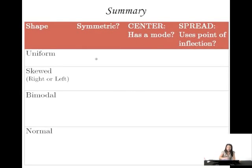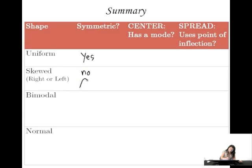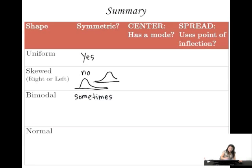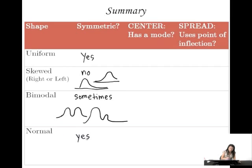Let's summarize what we've learned. We've learned four different shapes: uniform, skewed right or left, bimodal, and normal. We've also learned asymmetric and symmetric. Uniform distributions are largely symmetric because rectangles are symmetric. Skewed distributions are asymmetric because either the right or left tail is long. Bimodal distributions are sometimes symmetric and sometimes not. Normal distributions are always symmetric.